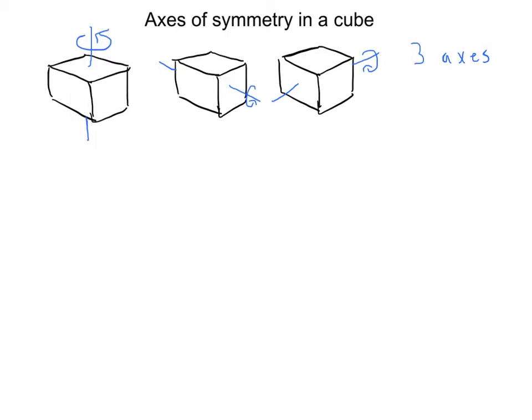Now, how many degrees do I have to spin it in order to get this face here to line up over on that face there? 90. And then I can rotate another 90 and another 90. So there are three axes in a cube that give you 90, 180, and 270 degree rotational symmetry. Are there any other axes?